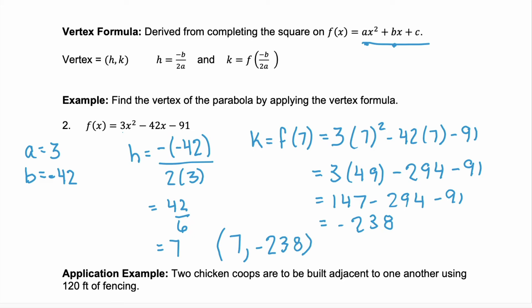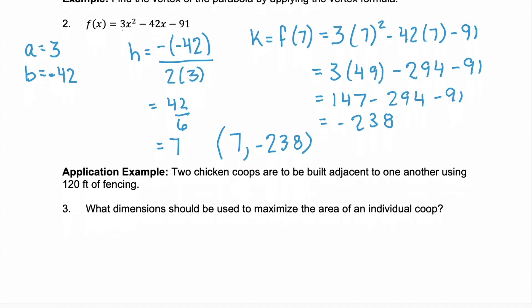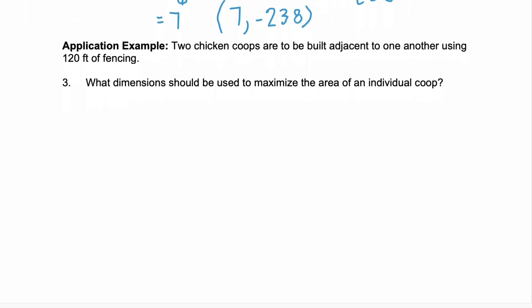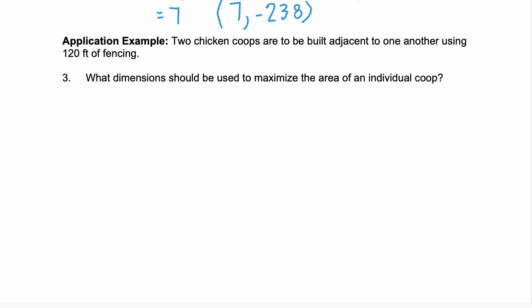Now let's look at an example with an application. We are creating two chicken coops. So two chicken coops are to be built adjacent to one another using 120 feet of fencing. Adjacent means if we build one chicken coop, we're going to put the second one right next to it so that we're sharing a piece of that fencing.